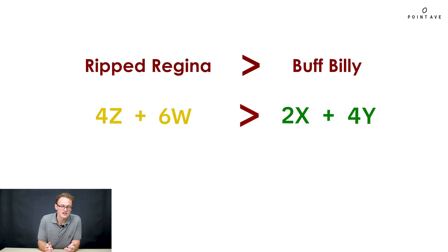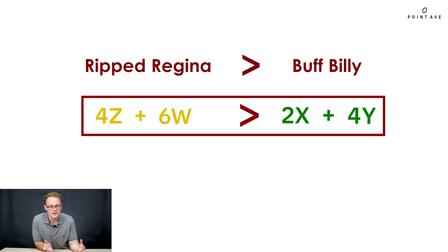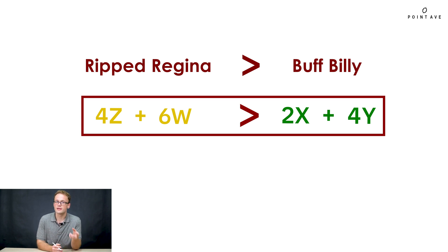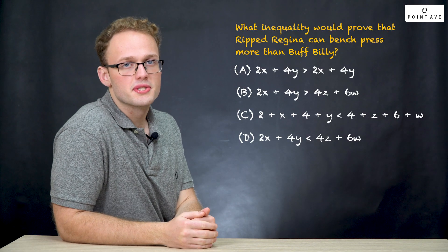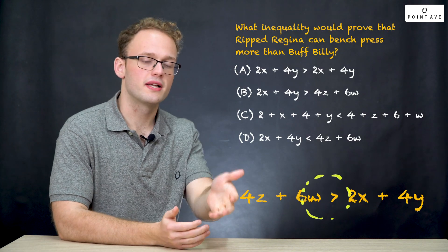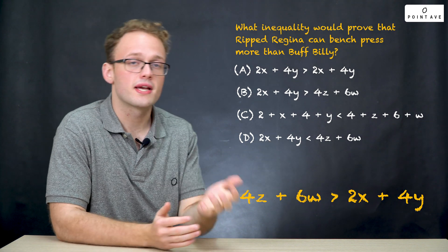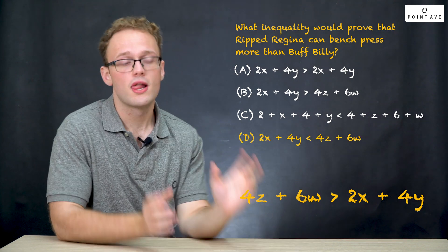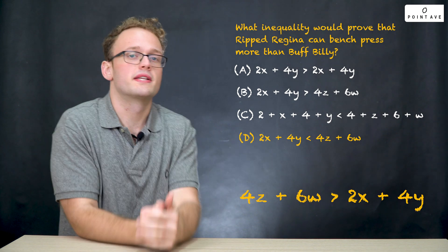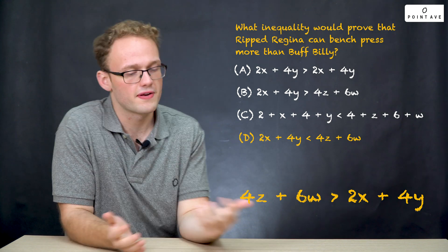So now we have our final inequality: 4z + 6w is greater than 2x + 4y, showing that Ripped Regina can lift more than Buff Billy. To get our final solution, we compare the inequality we found with the answer choices, and we can easily see that it matches answer choice D — we've just flipped the inequality, but it's all the same and we found our answer.